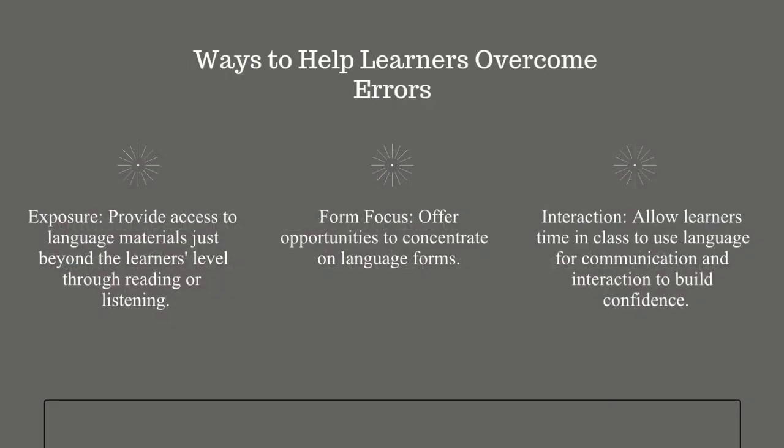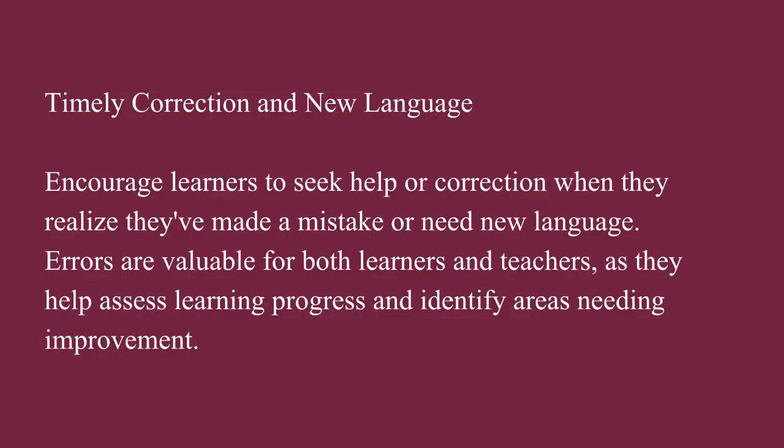Ways to help learners overcome errors. Exposure: provide access to language materials just beyond the learner's level through reading or listening. Form Focus: offer opportunities to concentrate on language forms. Interaction: allow learners time in class to use language for communication and interaction to build confidence. Timely Correction and New Language: encourage learners to seek help or correction when they realize they've made a mistake or need new language.